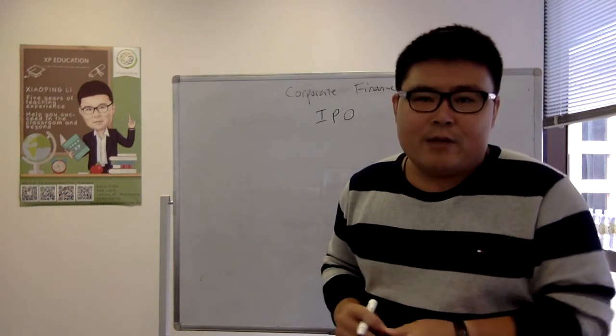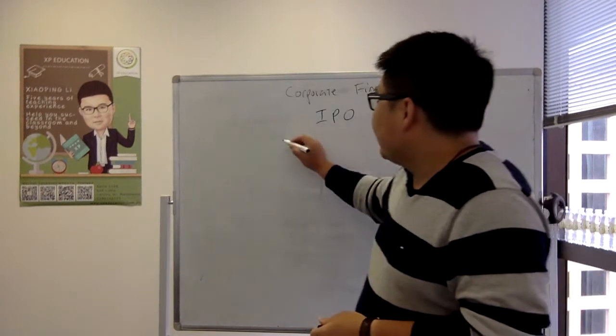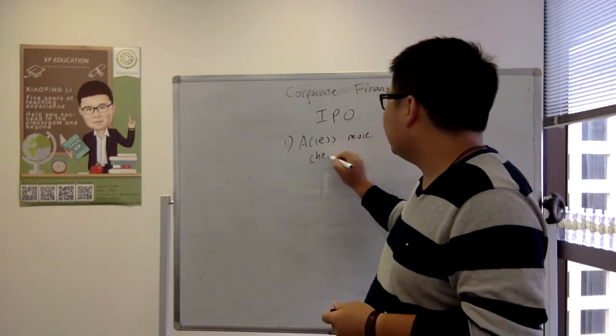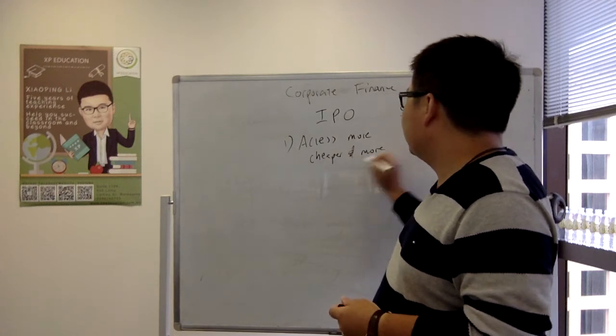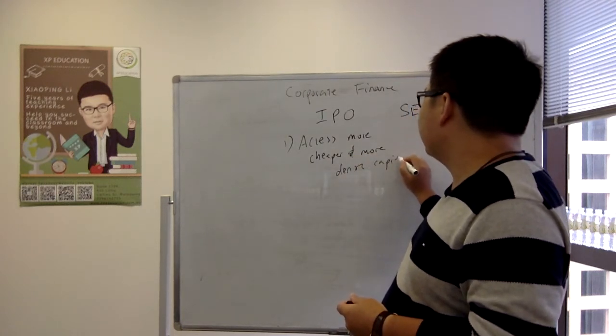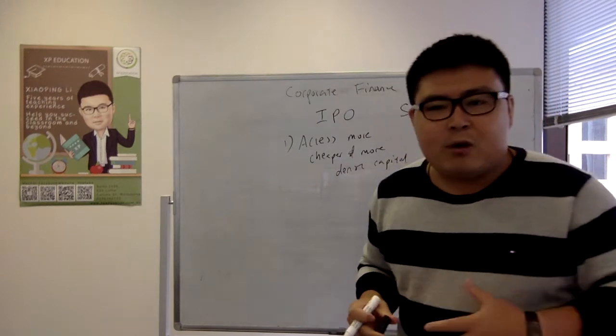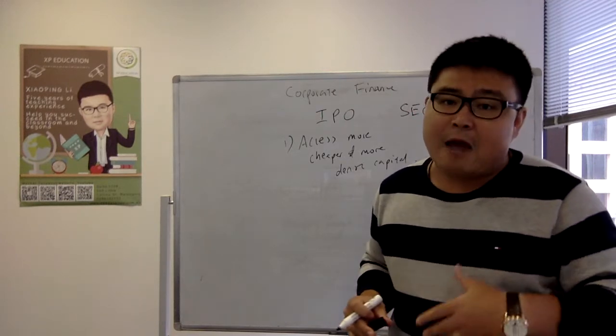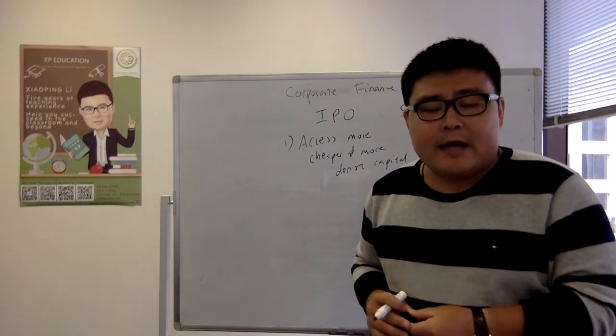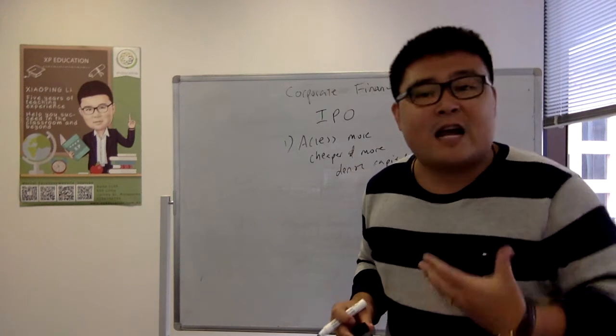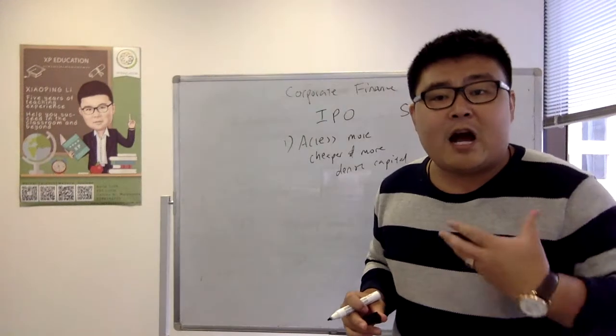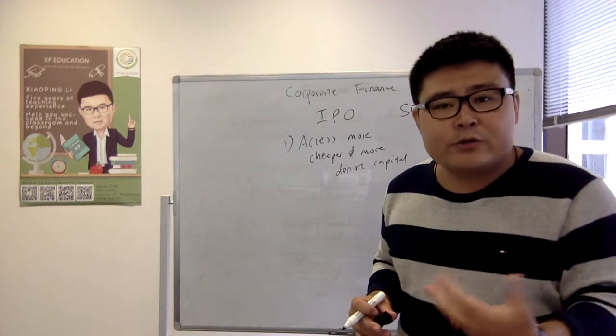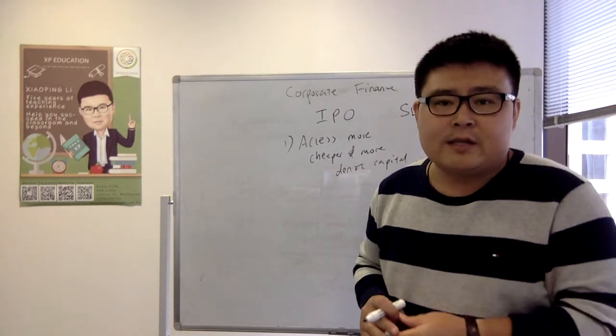Now, why exactly do companies want to go IPO? Well, first of all, it's about accessing more money, more cheaper and more dense capital. Now think about it. Imagine that you are a small private company. Obviously, there's gonna be a certain restriction in terms of how much exactly you can borrow, and also, what is the amount of capital that is available to you. Now, once you're actually physically IPO'd, this means that you can access a lot more cheaper finances by debt, and also, you have this extra option by equity.